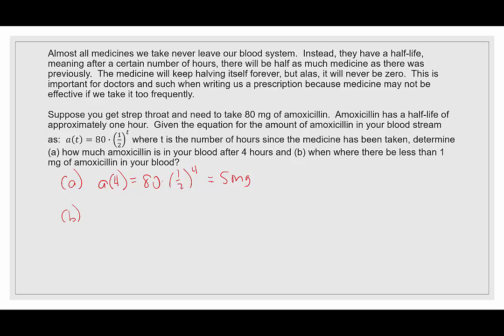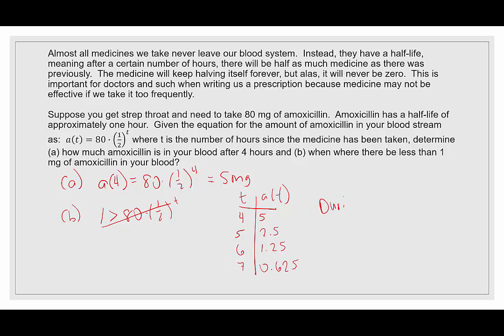Part B: when will there be less than one milligram of amoxicillin? This is asking when is 1 greater than 80 times (1/2) to the t. Since we haven't covered logarithms yet and can't isolate t from the exponent, we'll make a table. We know at t = 4 we have 5 mg. At t = 5 we get 2.5, getting closer. At t = 6 we get 1.25, even closer. At t = 7 we get 0.625. So it occurs during the seventh hour — by the seventh hour, there will be less than one milligram of amoxicillin in your bloodstream.